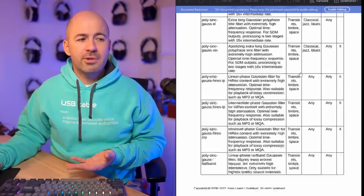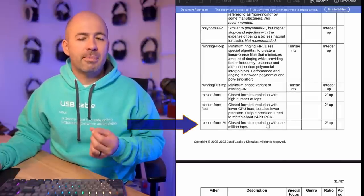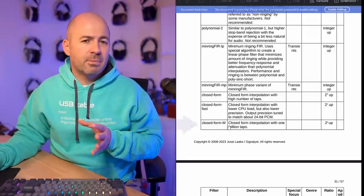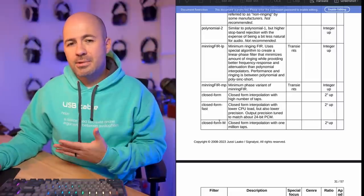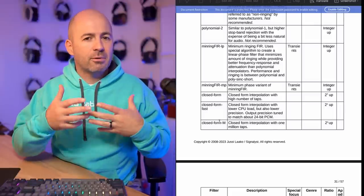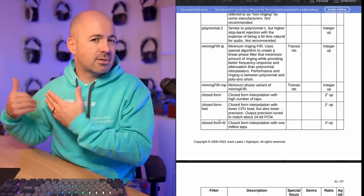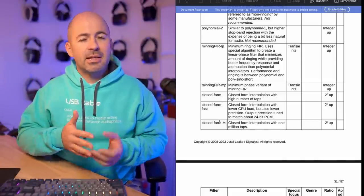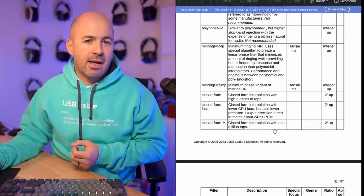The other filter I was keen to try was the Closed Form M filter, using Closed Form interpolation with 1 million taps. Based on some reading I'd done, I had a feeling this may have been closest to what's being done in the M-Scaler — it was just a hunch. But it's using a million taps, the same as the M-Scaler, meaning it's going to process the signal essentially a million times. I was curious to see how it sounded and whether I had any reason to prefer it over PolySync Gauss.